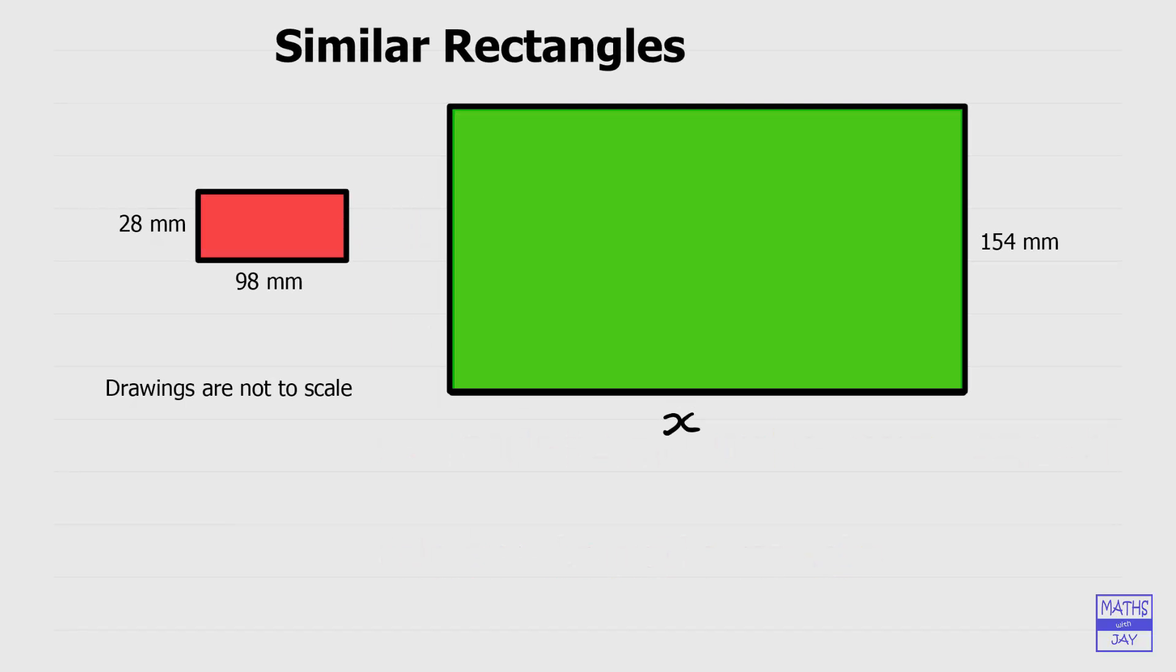Here are the two rectangles. Note that they're not drawn to scale, so no good trying to do this by ruler and measuring. We've got the two sides of the first rectangle, the smaller rectangle given, but we've got the longer side of the bigger rectangle unknown. So we want to find what x is.